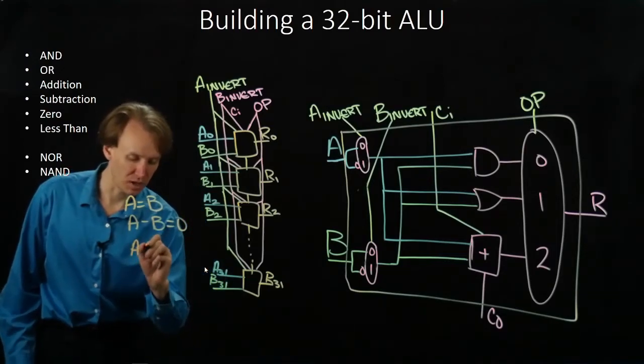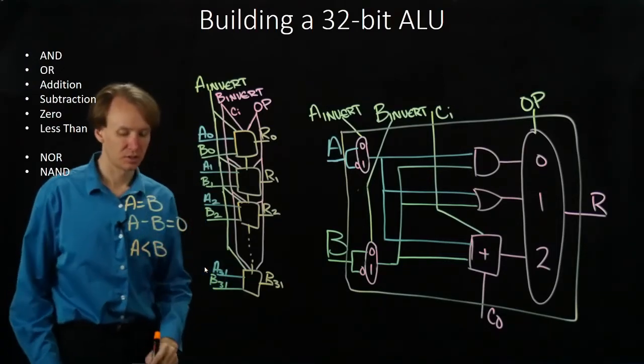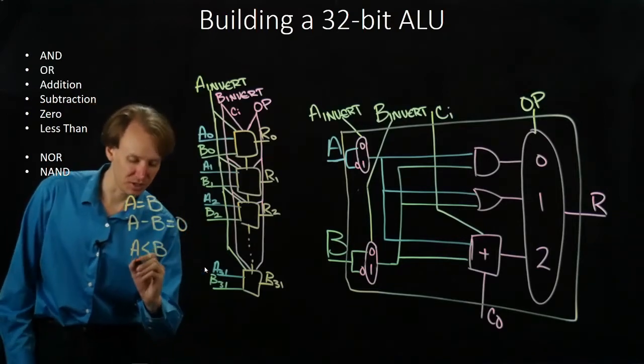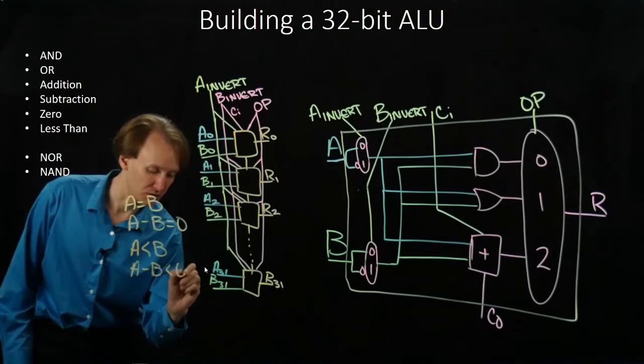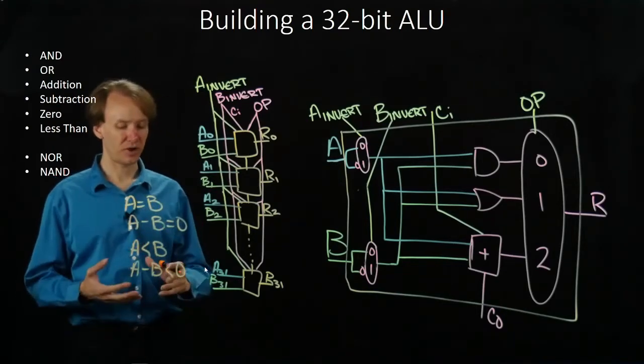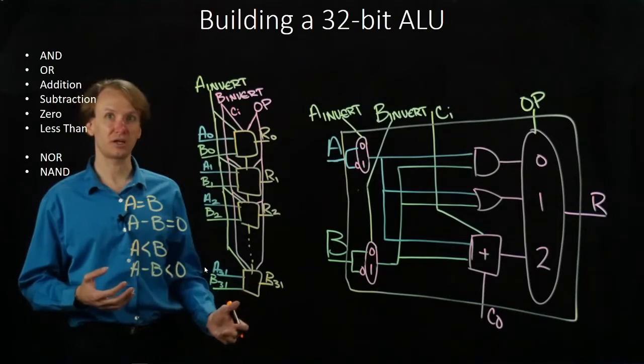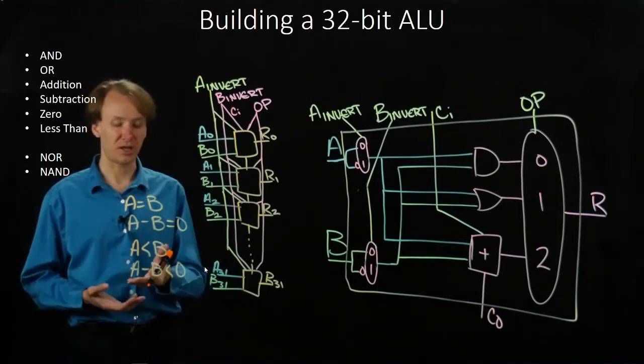We can do something similar for a less than b, because a less than b means that a minus b is less than zero. So if we can find an easy way to show that our result is negative, then we can easily say that a is less than b.